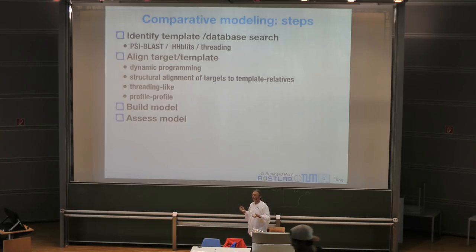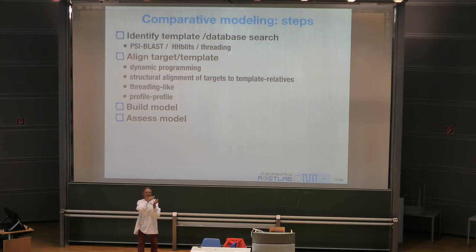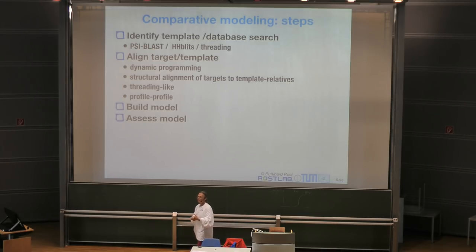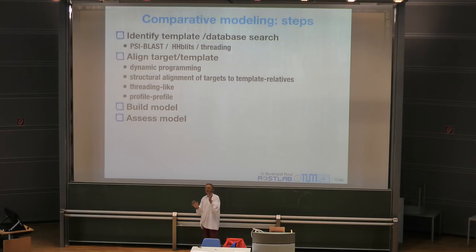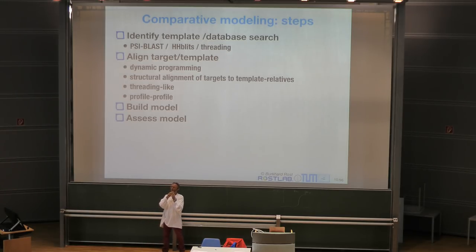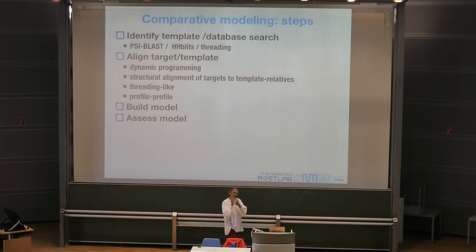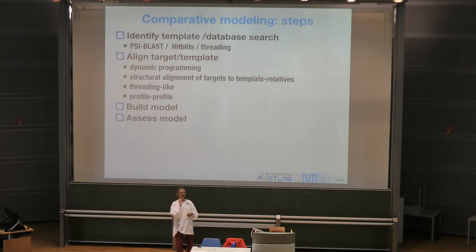The next step is to assess the model — how good is it? In this simple process, what could go wrong? One problem is that the two proteins may not have the same length, so they don't fit. Even if I just take those five matching residues and transfer their coordinates, things could still go wrong.